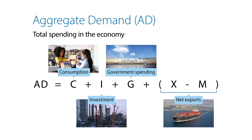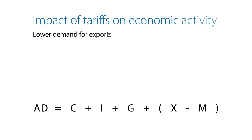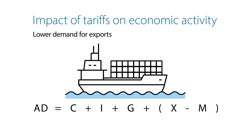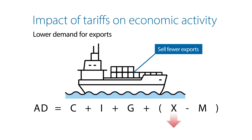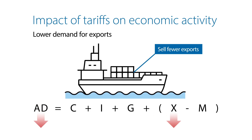Here's how tariffs can affect aggregate demand. First, tariffs make imported goods more expensive, so people tend to buy less of them. All else equal, countries facing tariffs sell less of these goods, which reduces their export revenue and could slow their economic growth.